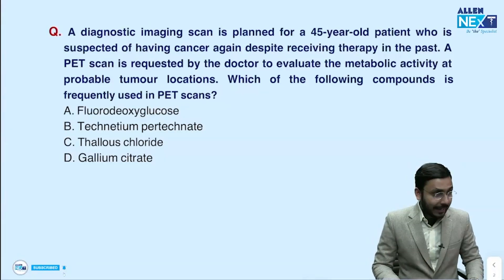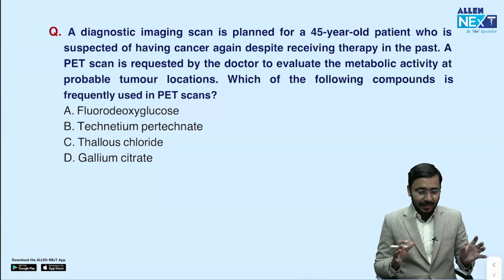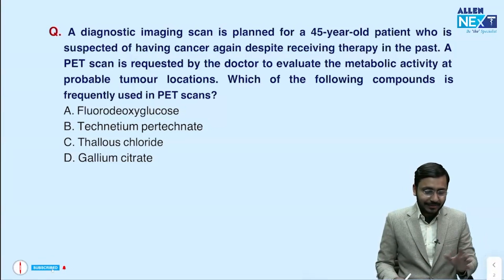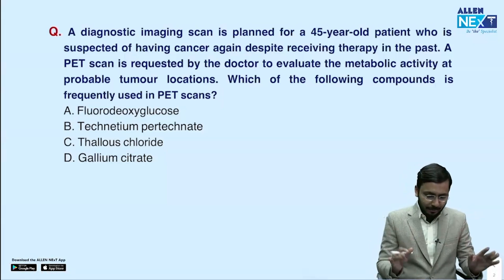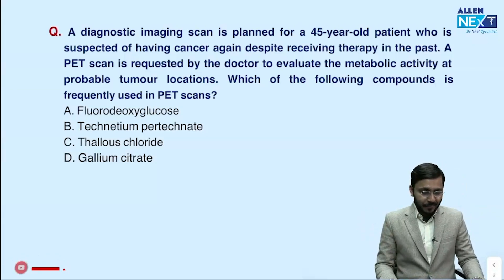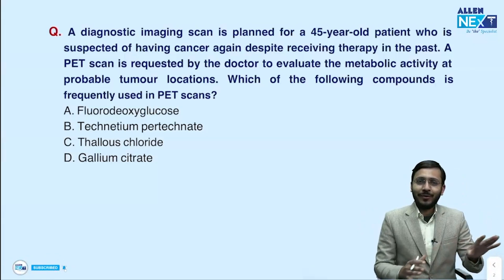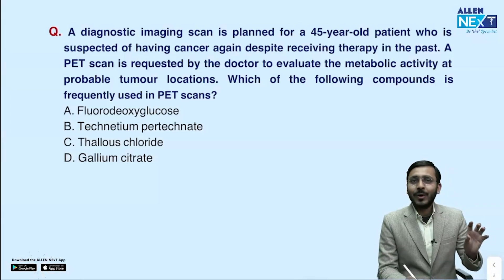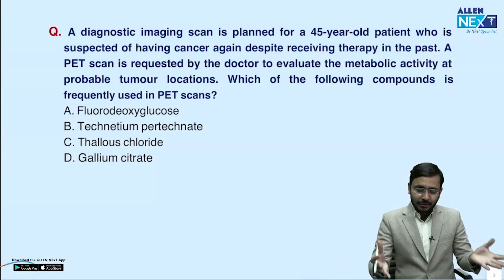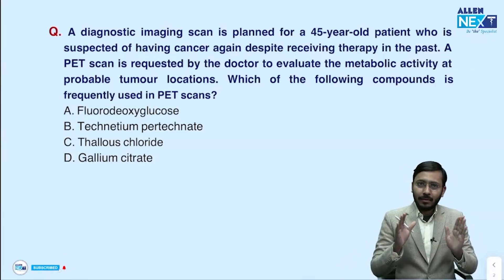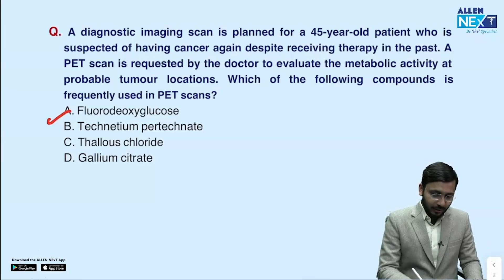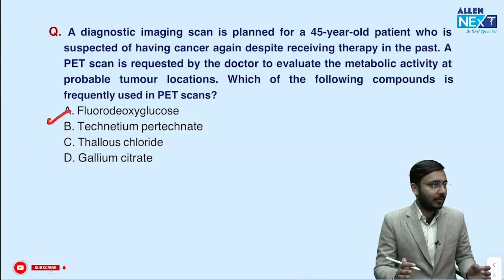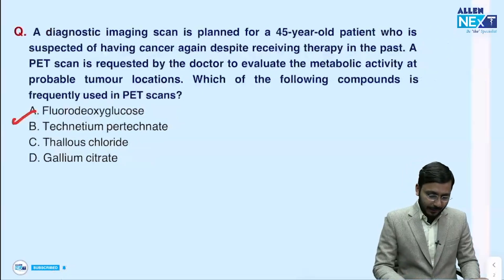Let's move on to the first question. A diagnostic imaging scan is planned for a 45-year-old patient suspected of having cancer again despite receiving therapy in the past. A PET scan is requested to evaluate the metabolic activity of the probable tumor location. The question is: which compound is frequently used in PET scans? We know the most common metabolite used in PET is FDG — fluorodeoxyglucose. So the answer is FDG.